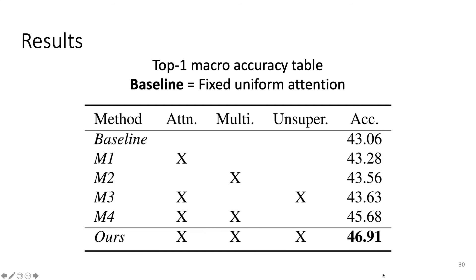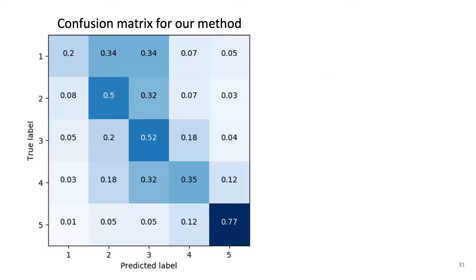This evaluation shows how the various components impact accuracy. The baseline model gets 43.06%. Adding attention gives a very small bump, adding multitask learning also gives a small bump, but the biggest gains come from attention plus multitask learning together. Adding all pieces together gets close to 47% accuracy — a nice improvement with just a few tweaks to the architecture without requiring any additional manual annotation effort.